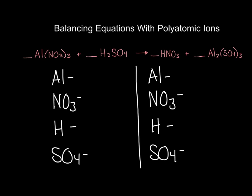Next, I'm going to count how many of each we have. On the reactant side: one aluminum, three nitrates — the subscript indicates three — two hydrogens, and one sulfate. On the product side: two aluminums, one nitrate, one hydrogen, and three sulfates.